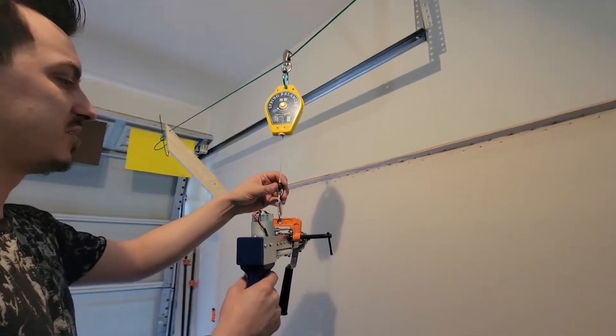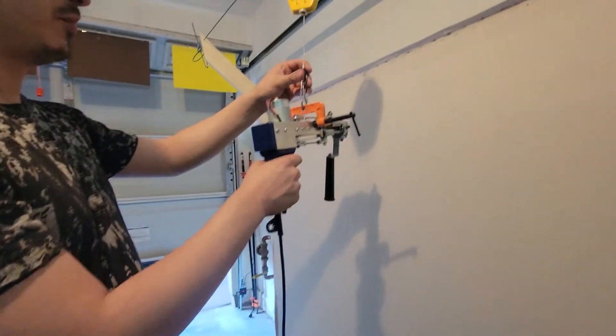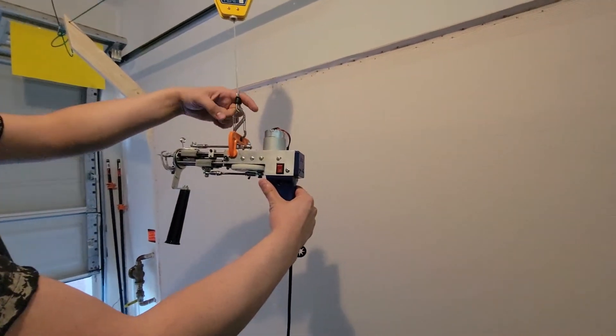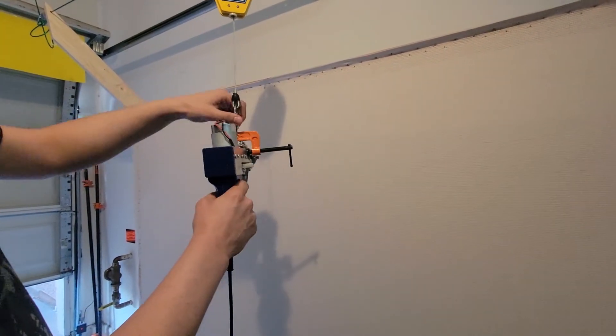So the spring balancer keeps this nice and tense so we can move it up and down and it's attached to the gun through this little S carabiner and this C clamp.